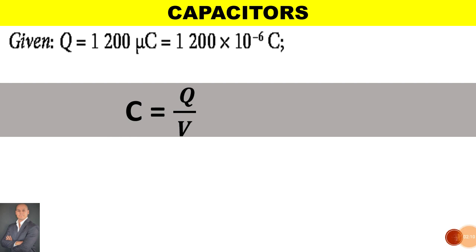If we are given a charge of 1200 micro coulombs which is the same as saying 1200 times 10 to the minus 6, how much will the capacitance be?